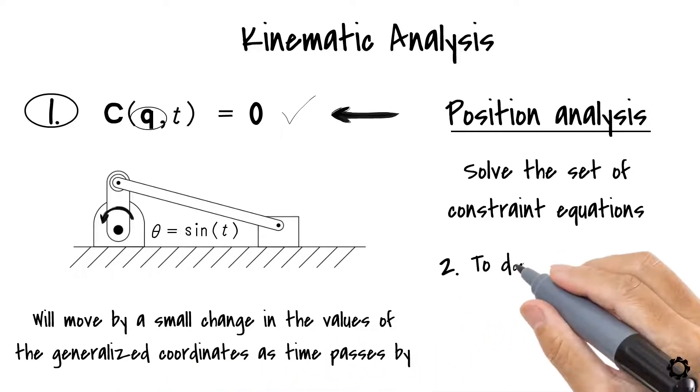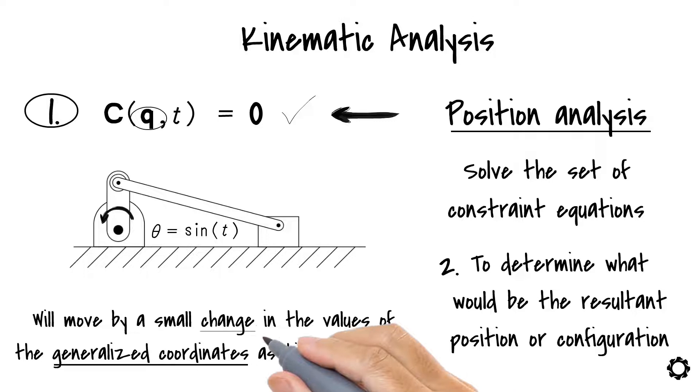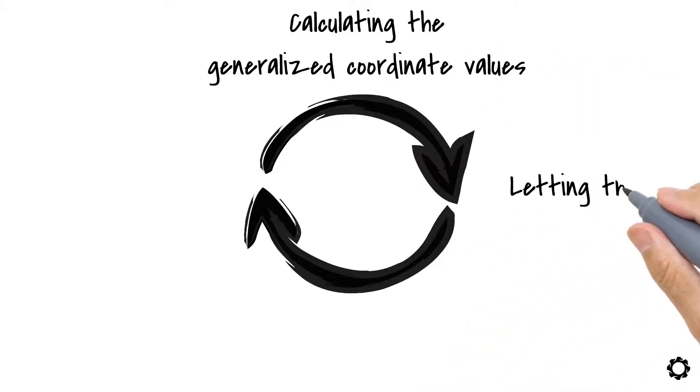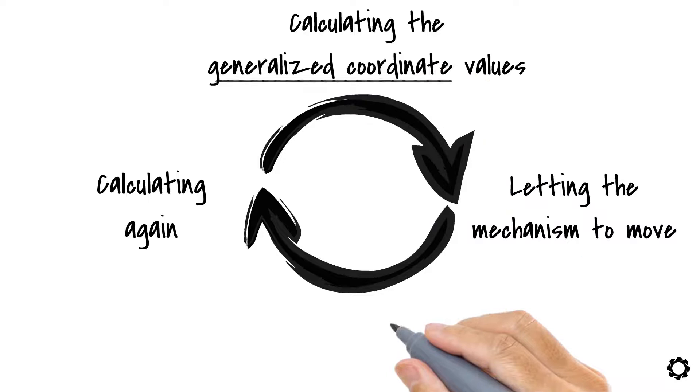Then, to determine what would be the resultant position or configuration of the mechanism after this small generalized coordinate change, we will need to add this change to our original system's configuration. As you suspect, this becomes an iterative procedure of calculating the generalized coordinate values, then letting the mechanism move, then calculating again the value of the generalized coordinates, and so on.